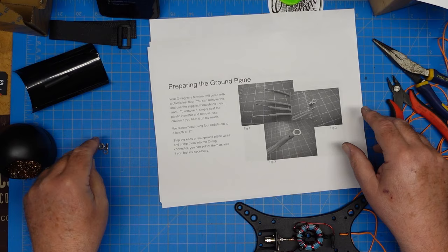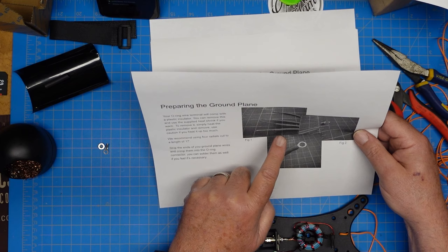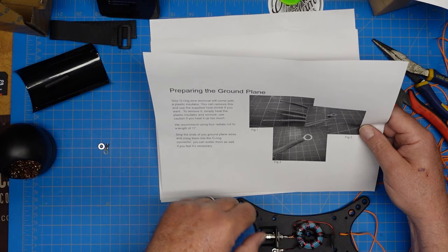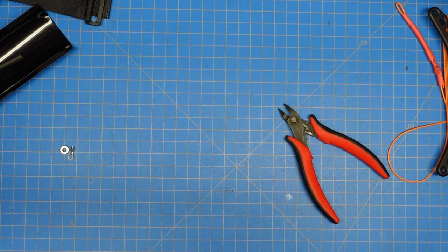Now we need to make our ground plane. We're going to peel off four 17-foot pieces of wire, strip the ends, put them together, tin them up, and put them in this ring terminal. That's going to go over here, we'll fasten it back down with our nut, and we'll be done building the antenna part of the antenna.